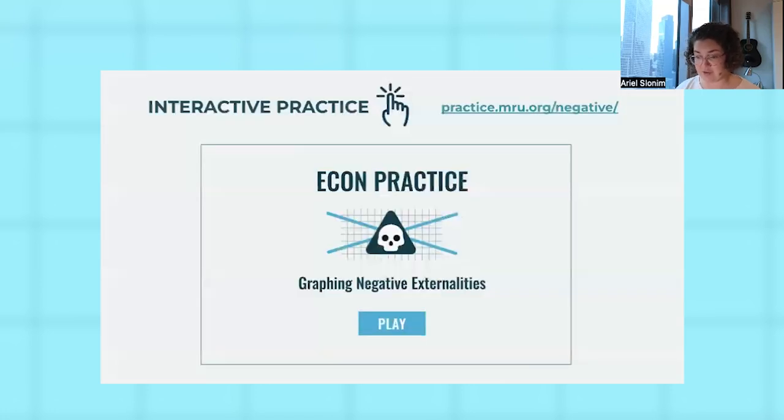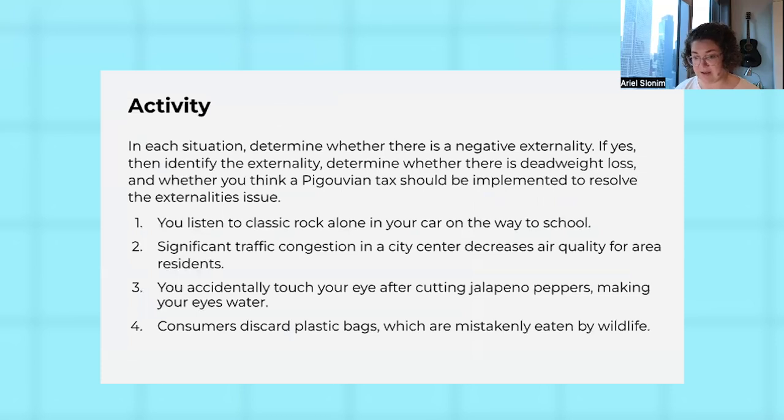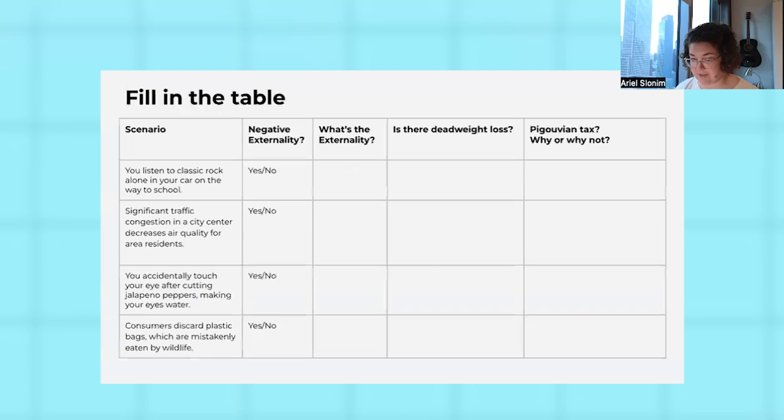To have students review and practice externalities, we have them graph a negative externality and answer some questions. That's a way that students can get immediate elaborative feedback on whether they're understanding the material. Then their last activity is to go through these four situations, and they're asked to identify, fill out this table. Is there a negative externality? What is it?